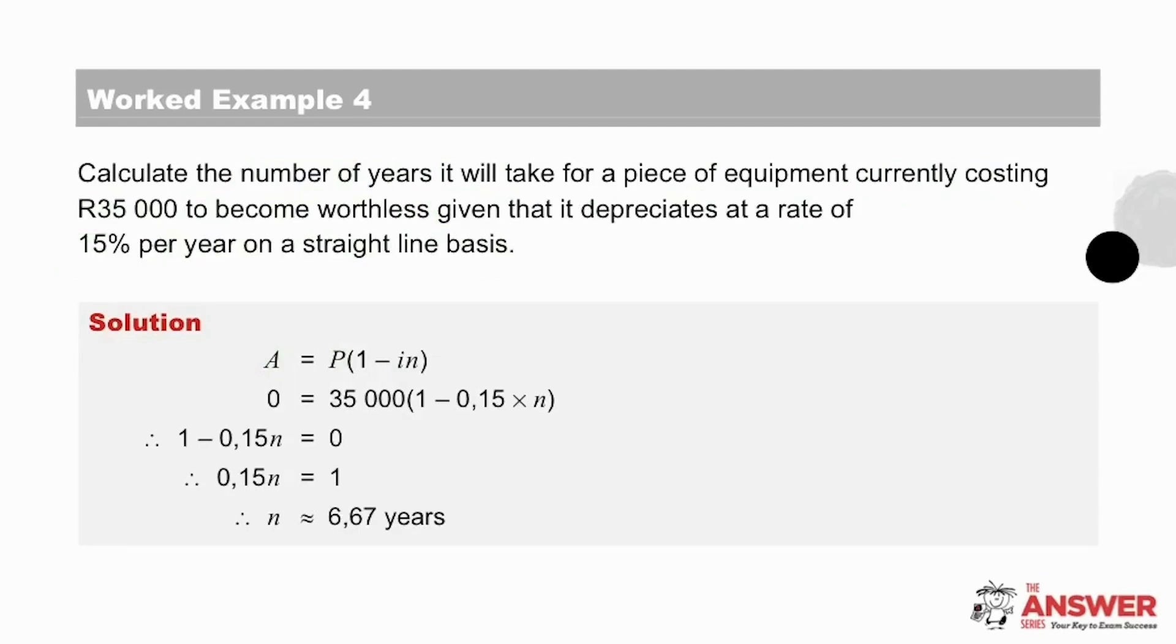Did you recognize the terminology on a straight line basis, which indicates to use the simple decrease formula? Did you realize that if something is going to become worthless, that A's value, which is the value in the future, needs to be zero. And then that the 35,000 rand is the present value of the equipment. And then lastly, that the 0.15 is the rate of depreciation and that it is N that we are needing to solve for. And now, substituting and calculating with care, we get an approximate answer for N of 6.67 years. And this tells us that in about 6 and 2/3 years time, this equipment will become worthless.